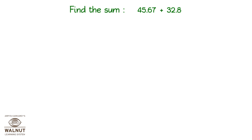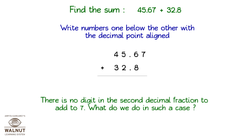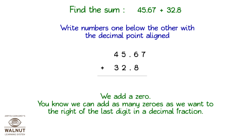Find the sum 45.67 plus 32.8. Write numbers one below the other with the decimal point aligned. There is no digit in the second decimal fraction to add to 7. What do we do in such a case? We add a 0. You know we can add as many zeros as we want to the right of the last digit in a decimal fraction.